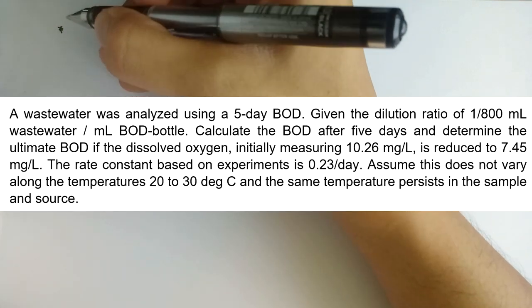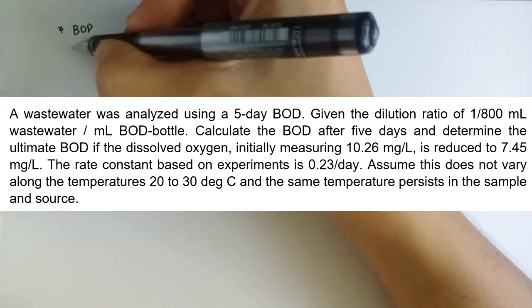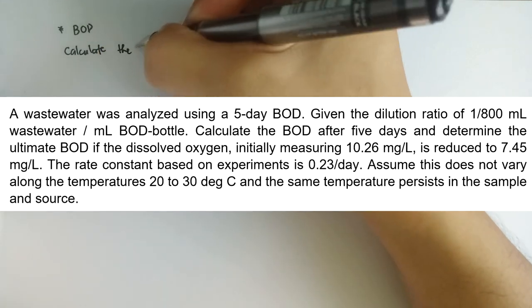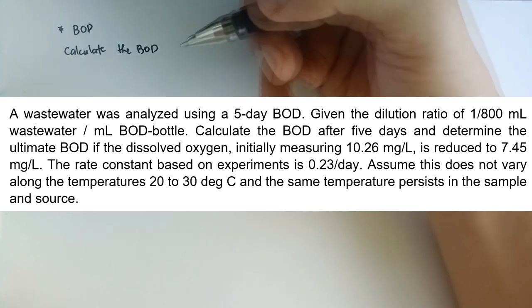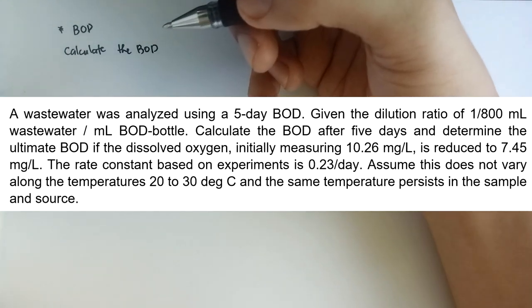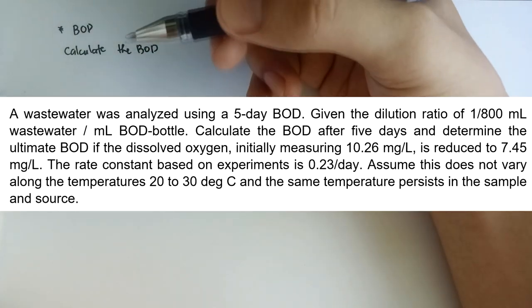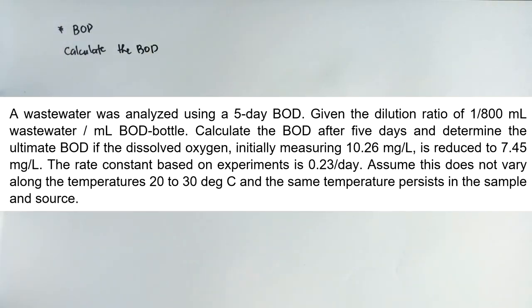Calculate the BOD after 5 days and determine the ultimate BOD. The dissolved oxygen initially measuring 10.26 mg per liter is reduced to 7.45 mg per liter. The rate constant based on experiments is 0.23 per day. Assume this does not vary along the temperatures 20 to 30 degrees Celsius, and the same temperature persists in the sample and source.